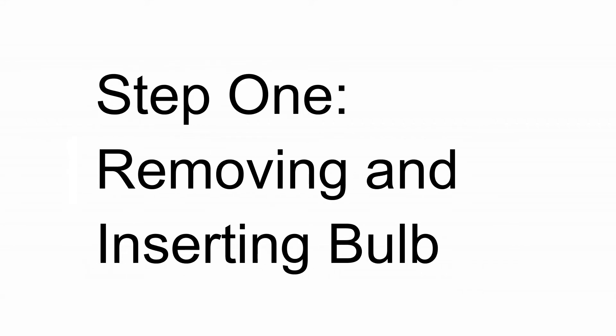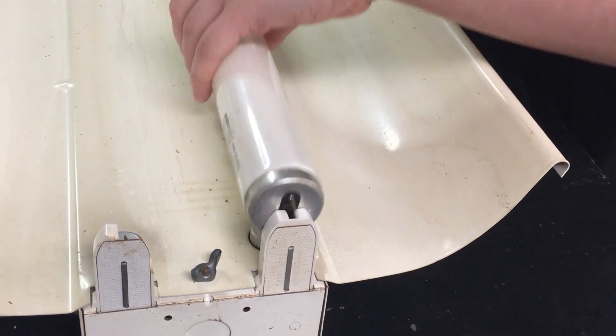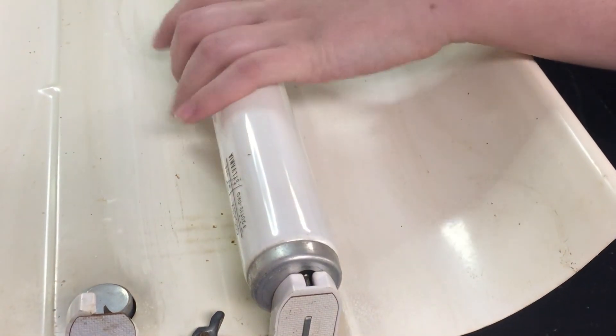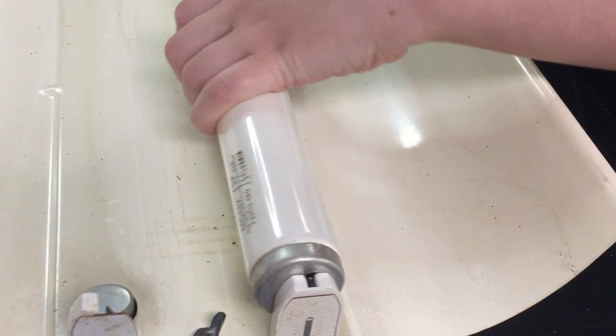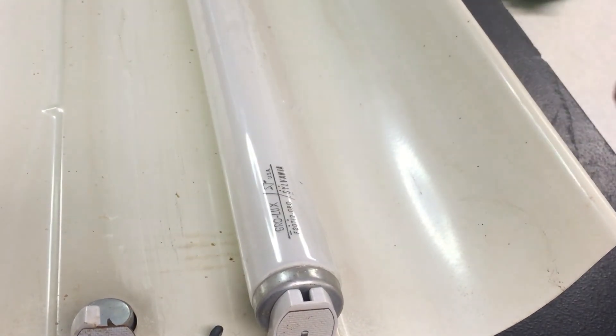A broken bulb is one of the most common problems with fluorescent light sources, so checking the bulbs is a good place to start when servicing a light source. To remove a bulb, twist the bulb 90 degrees, then gently pull it out of the connection holder. To insert a bulb, perform the reverse. Line the bulb pins up vertically with the connection holder slots, insert the bulb, and then twist it 90 degrees to secure it.